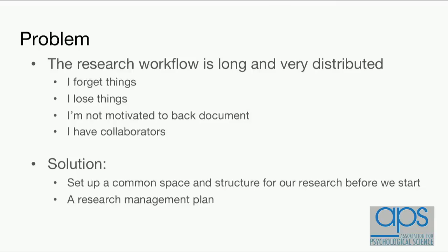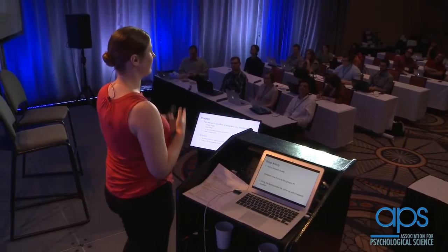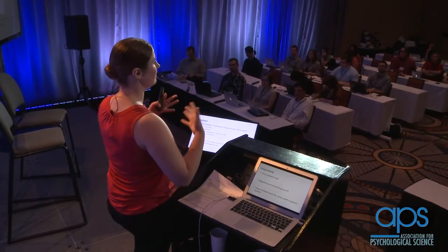So what can we do about that? The first thing we want to think about is setting up a common research space and structuring our research before we get started. One thing you'll hear me say a lot during this workshop is put in the work at the beginning, so that we have our structure and our plan, and as we go through the process, we're just filling in the information. You can think of this as setting a research management plan — not just a data management plan, but thinking about how you're going to manage and store your research as you go through the process, so that you can reproduce your own work.